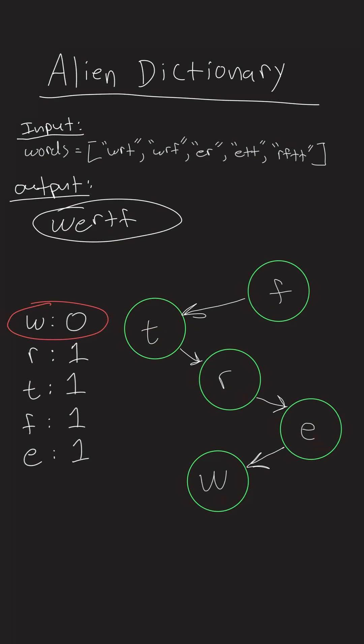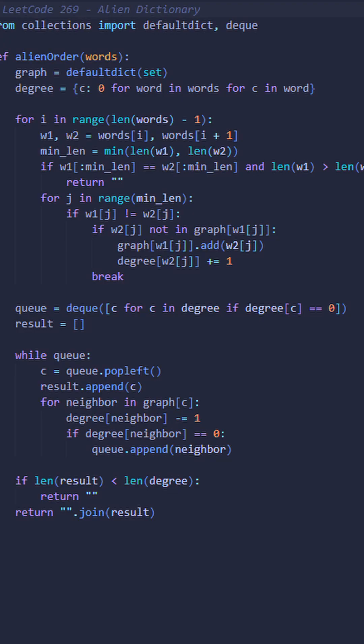If you process all nodes, you have a valid order. If not, there's a cycle. Pause the video to see the code.